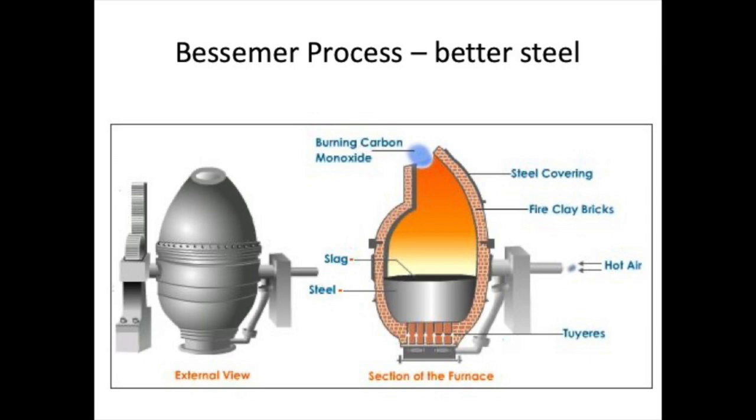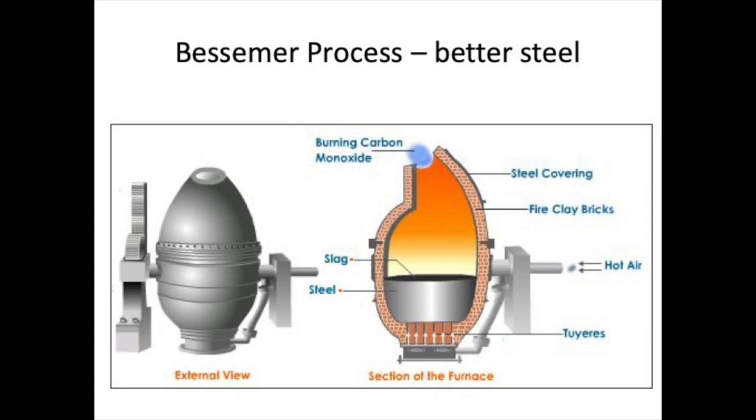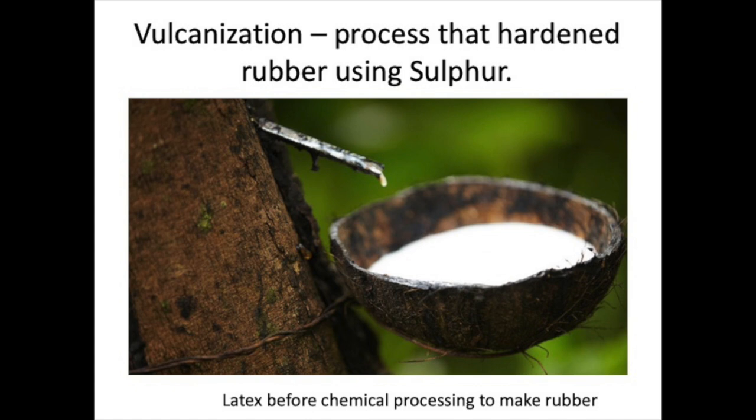Shipbuilding expanded for the same reason. Vulcanization was another industrial process. By using sulfur and heat, sticky, gooey latex could be turned into hardened rubber that was used for bicycle tires, leading to the expansion of a new leisure time activity on a new mass-produced good — the bicycle.